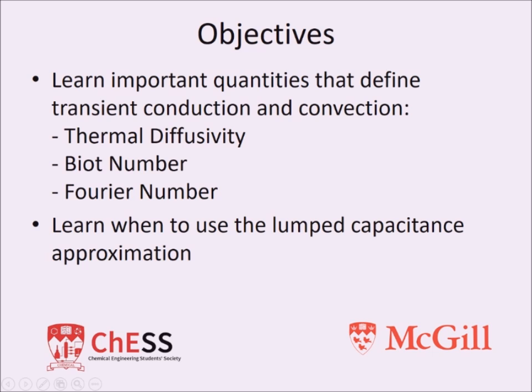We will be going over three important definitions, which are the thermal diffusivity, the Biot number, and the Fourier number, which are quantities that allow us to simplify some problems and will allow us to know when to use the lumped capacitance approximation, which I am sure you learned in class.